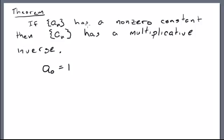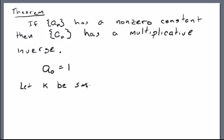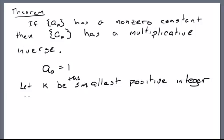If the sequence a_n has a non-zero constant, then a_n has a multiplicative inverse. We argued last time that we can assume that a_0 is equal to one, because if it's not, we just multiply by the constant sequence whose constant term is one over a_0. Let k be the smallest positive integer such that a_k is not equal to zero.